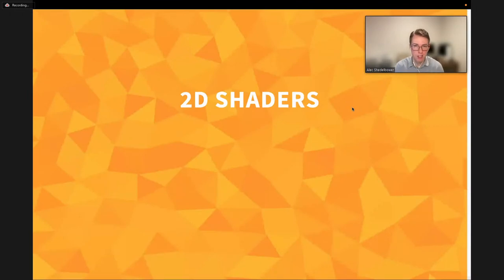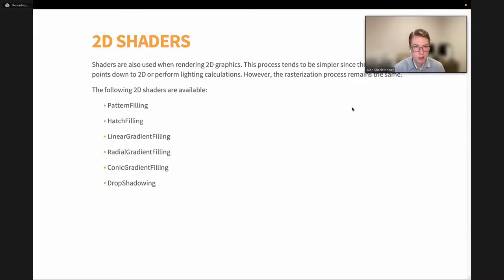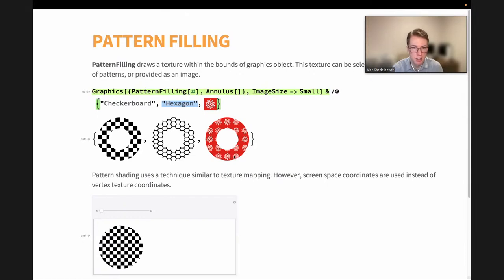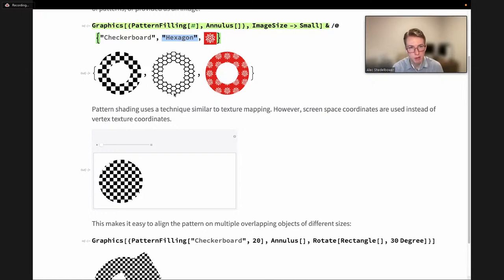Lastly, I'm going to talk about our 2D shaders. Shaders are not limited to 3D — we also use them for 2D graphics. This process is a lot simpler since you don't need the complicated projection step or lighting calculations, though the rasterization process remains the same. Here's a list of our 2D shaders currently available: pattern filling, hatch filling, gradient shaders, and the new drop shadowing directive. Starting with pattern filling: this draws a texture within the bounds of the object being shaded. You can select pre-existing patterns like checkerboard or hexagon tiling, or pass in your own image.